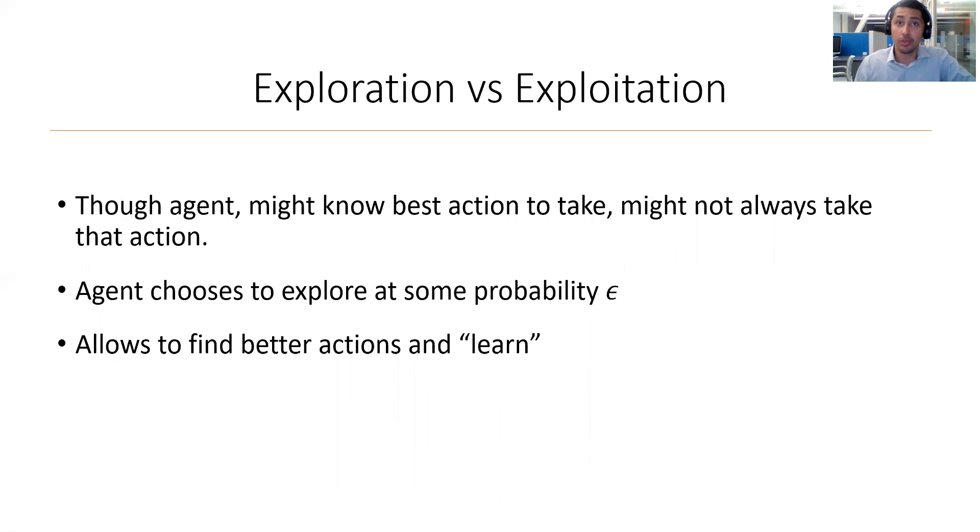However, even if the agent knows the best action given the information it has received, it might not always choose that action. This is because a major notion in the Q-learning algorithm is explore versus exploit. This means that after the Q-table is updated, the agent has the option to either choose what it believes to be the best action, or exploit, or choose some random action, or explore. This random action is chosen with the probability of epsilon.